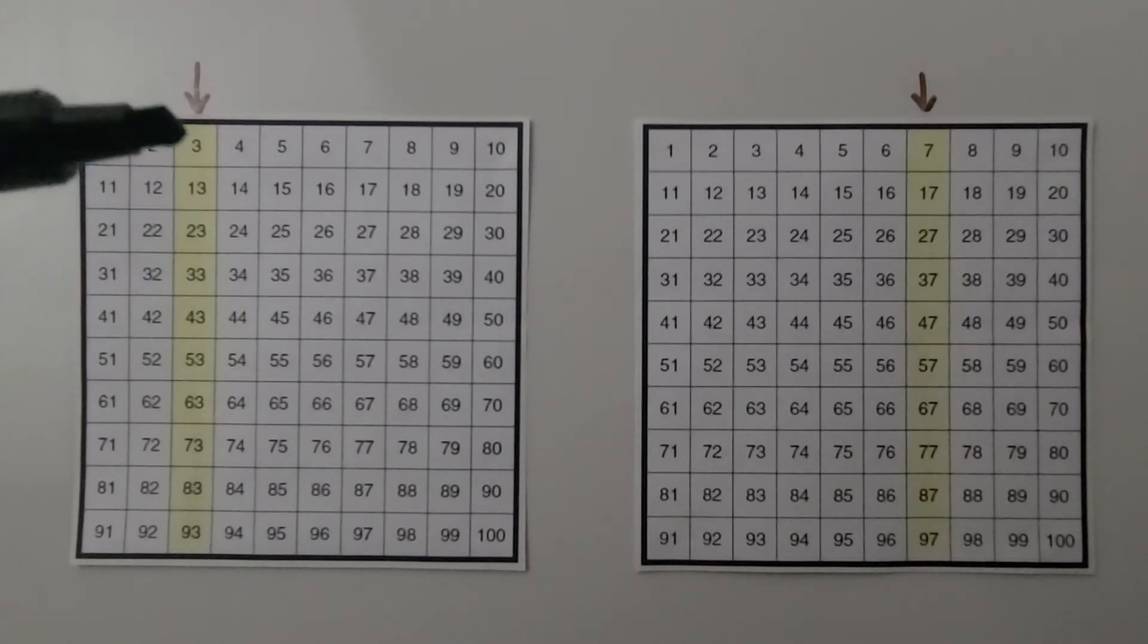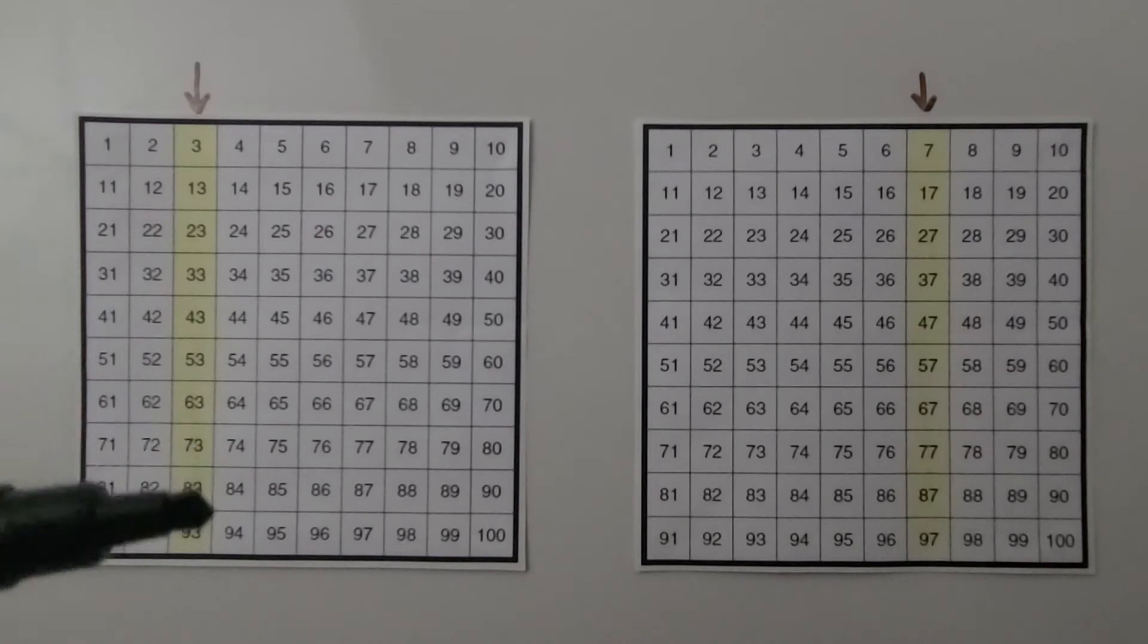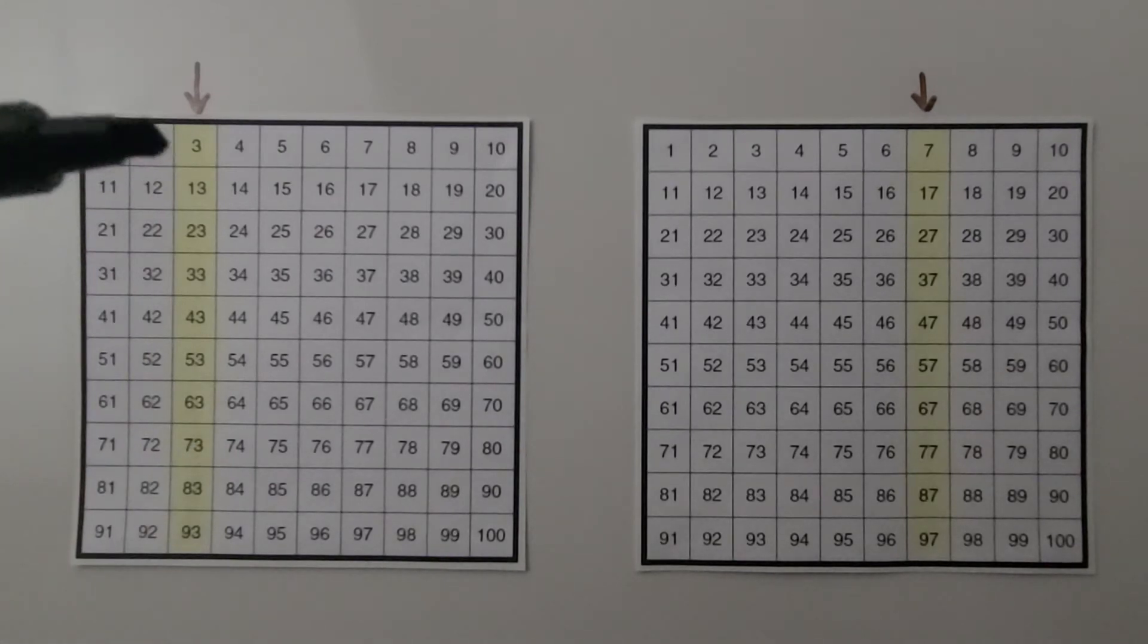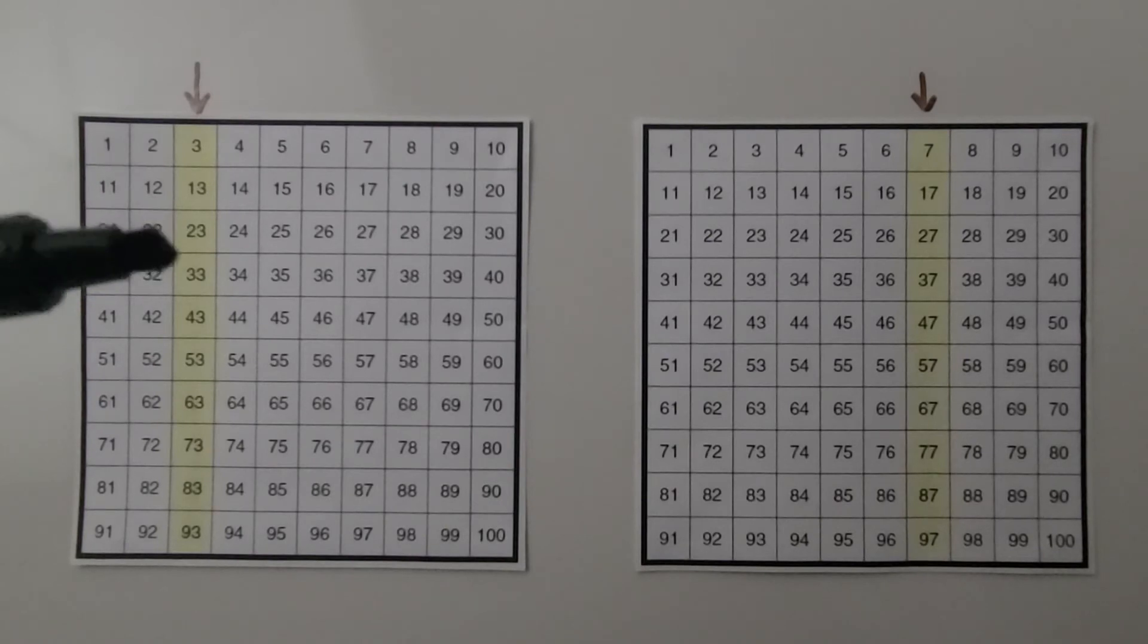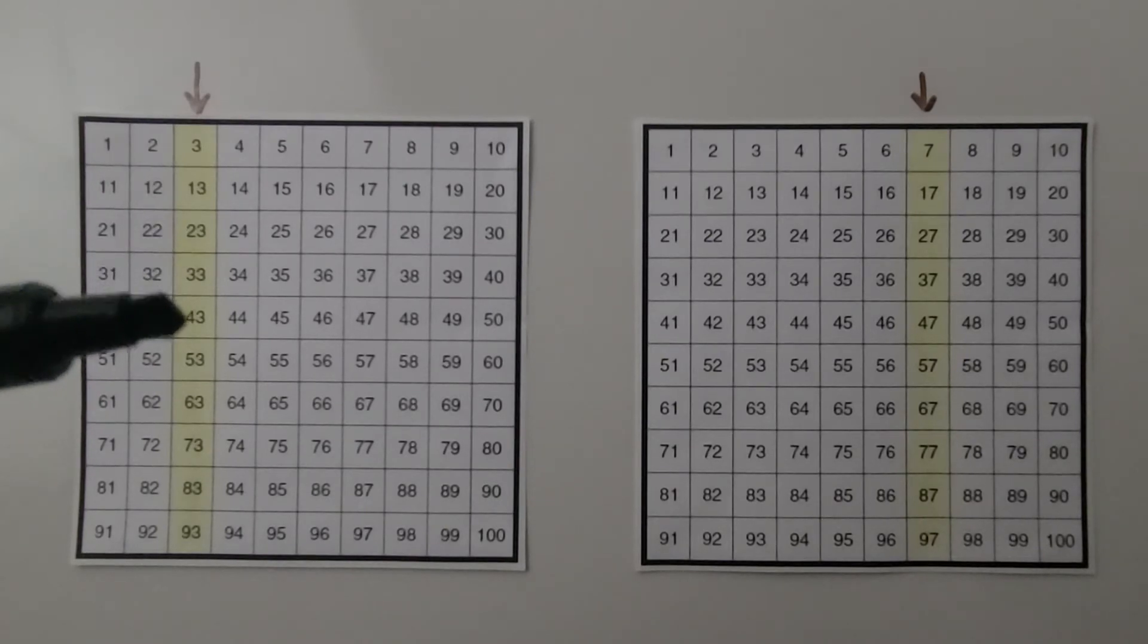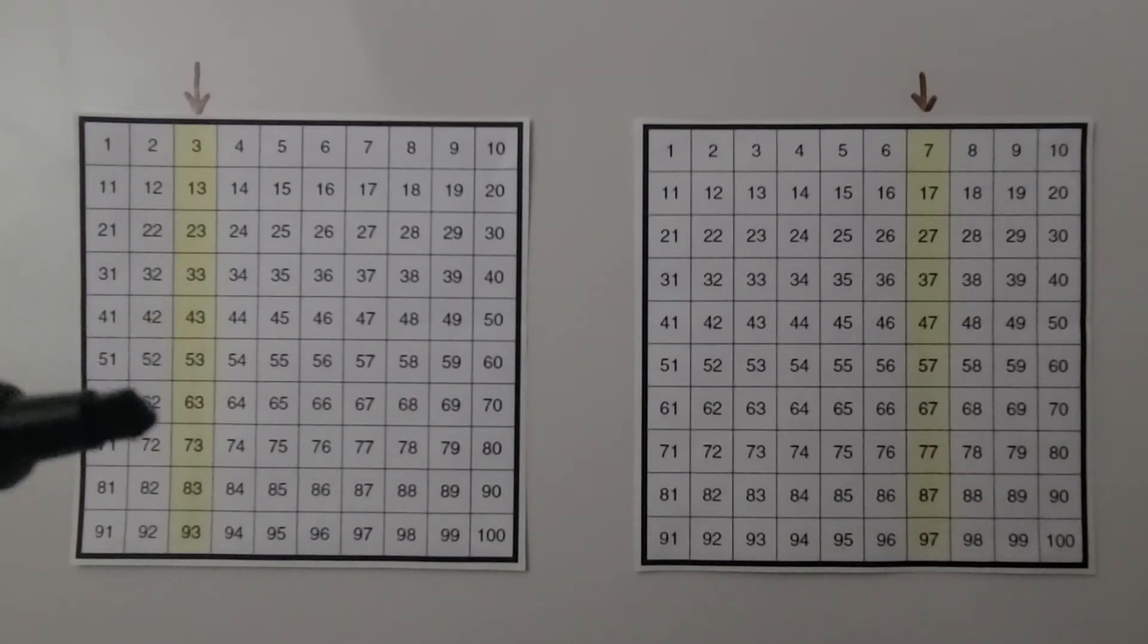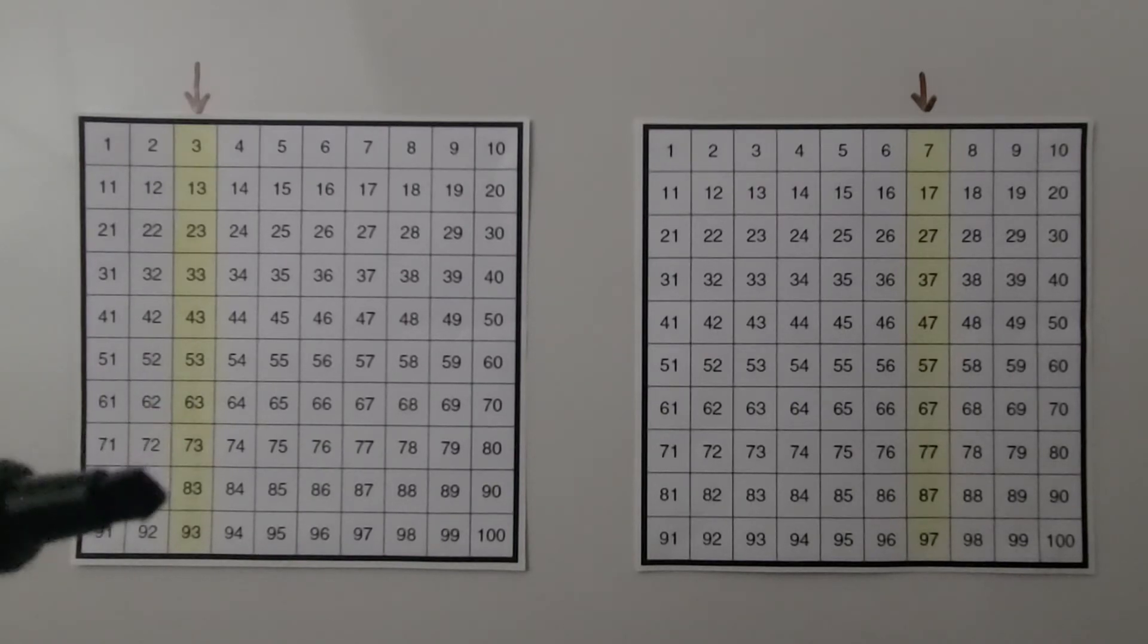So we can skip count 10 more by tens starting with 3: 3, 13, 23, 33, 43, 53, 63, 73, 83, and 93.